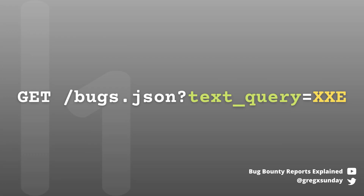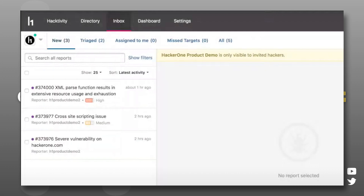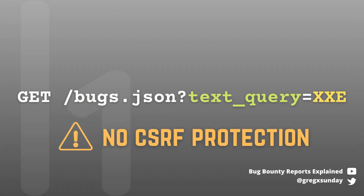On HackerOne there is a /bugs.json endpoint. It's used under the hood when you use the search feature on inbox. It has a text query parameter which you can use to query all the bugs to which you have access to as a reporter, triager, or whoever else. The endpoint used the GET method and no CSRF protection.